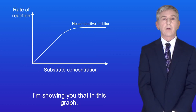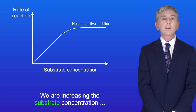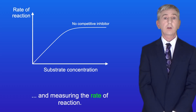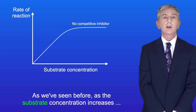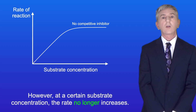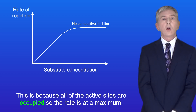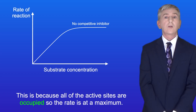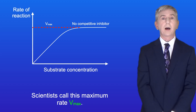This graph shows an enzyme in the absence of a competitive inhibitor. We're increasing the substrate concentration and measuring the rate of reaction. As the substrate concentration increases, the rate increases in proportion. However, at a certain substrate concentration, the rate no longer increases. This is because all of the active sites are occupied, so the rate is at a maximum — scientists call this maximum rate Vmax.